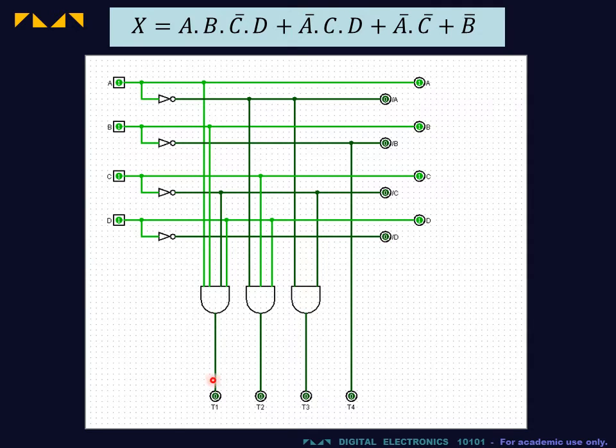So, for instance, the first product term, which is ABC bar D, is taken from the A line, the B line, the C bar line, and the D line.